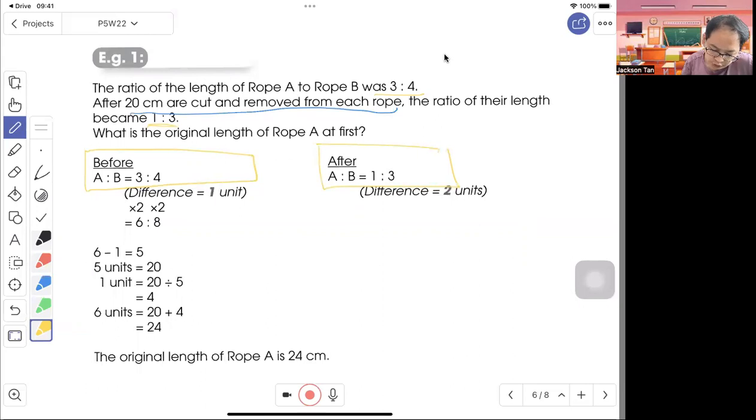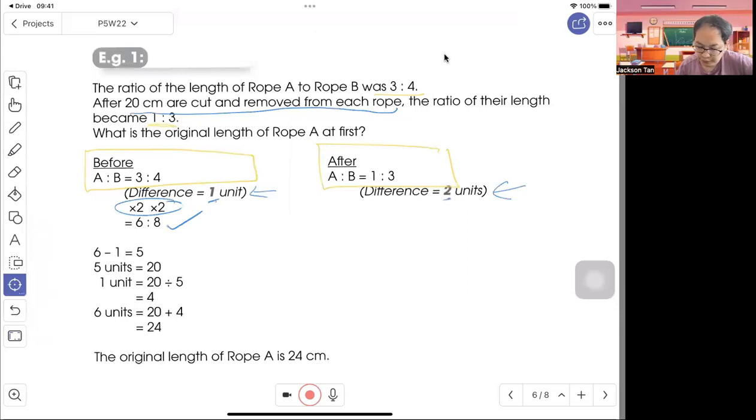What is the original length of rope A at first? Since 20 cm are cut from each rope, the difference, B is longer than A, is still the same. That's why the difference must be the same. 4 minus 3, the difference here is 1 unit. Here the difference is 2 units. Common multiple of 1 and 2 is 2. That's why we times 2 to get the ratio of 6 to 8.